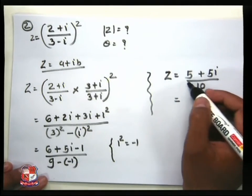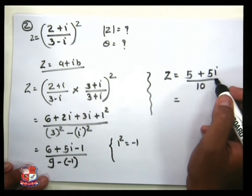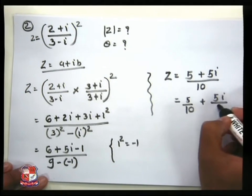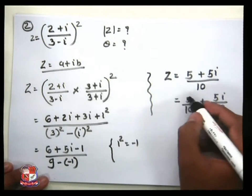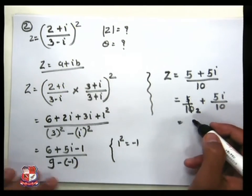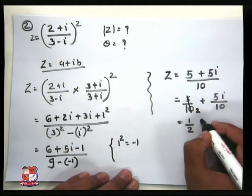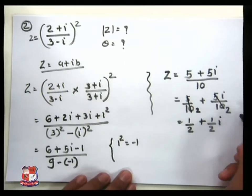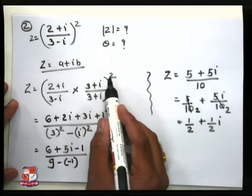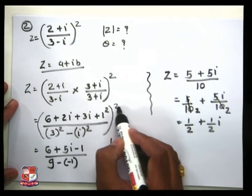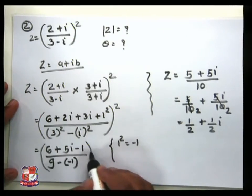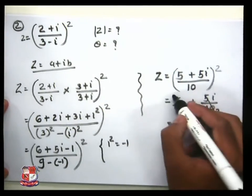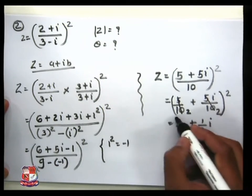Dividing both terms by 10: z = 5/10 + 5i/10 = 1/2 + (1/2)i. But we still have the square from the original expression, so we need to square this result: (1/2 + (1/2)i)².